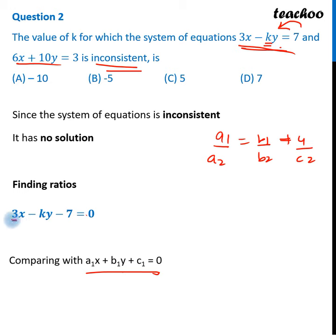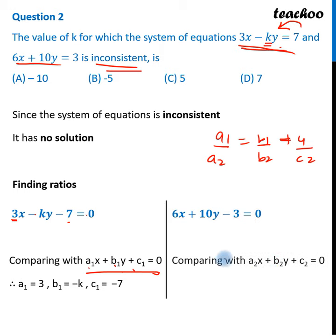Let's compare. a1 will be 3, b1 will be minus k, and c1 will be minus 7. Similarly, for the other equation, this will be the standard form. Now let's compare. a2 will be 6, b2 will be 10, and c2 will be minus 3.